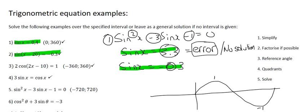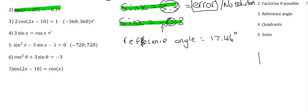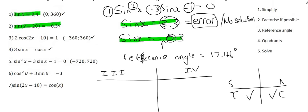For sin x equals negative 0.3, remember when you type in the reference angle on the calculator you don't include the negative. So you say shift sin of 0.3, and that reference angle will be 17.46 degrees. Notice I didn't put the negative on the calculator. What the negative tells us is that it is in the quadrants where sin is negative — so it's going to be in quadrant three and quadrant four.